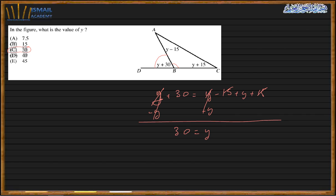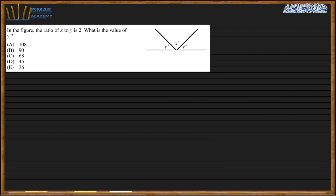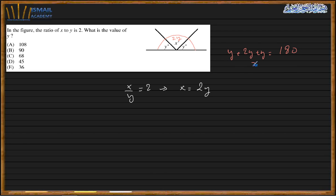Next question. In the figure, the ratio of x to y is 2. That means x equals twice y, so x equals 2y. These are supplementary angles, which means y plus 2y plus y equals 180, giving us 4y equals 180. Dividing by 4, y equals 45. D is my answer.